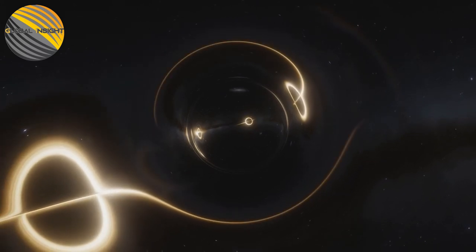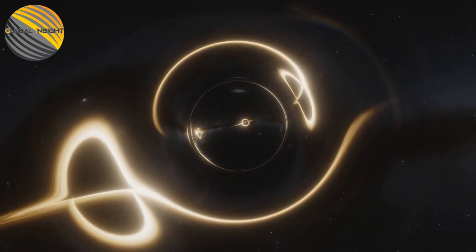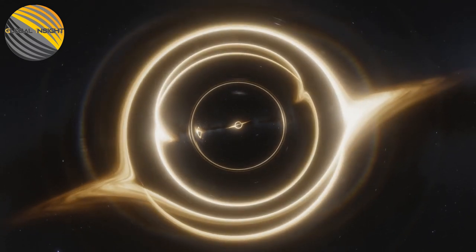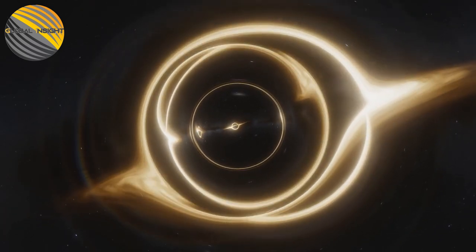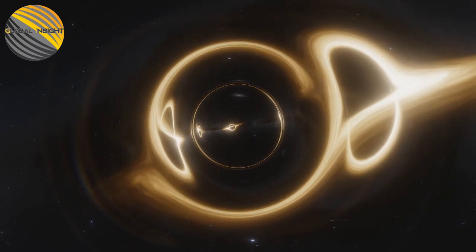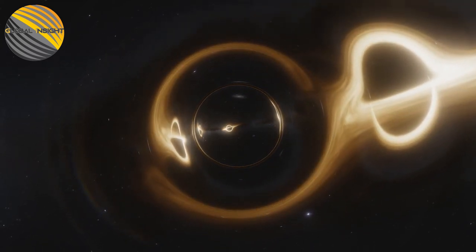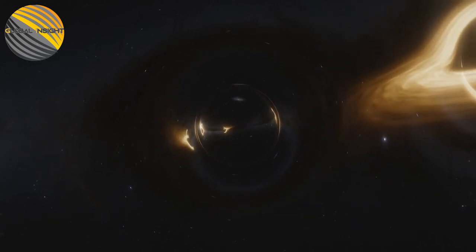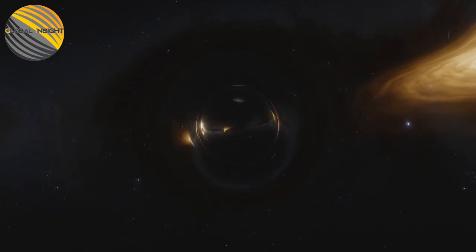Fourth, supermassive black holes could emerge from enormous bunches of dark matter. This is a substance that we can see through its gravitational impact on different objects. However, we don't have the foggiest idea of what dark matter is made of because it doesn't emanate light and can't be straightforwardly noticed.